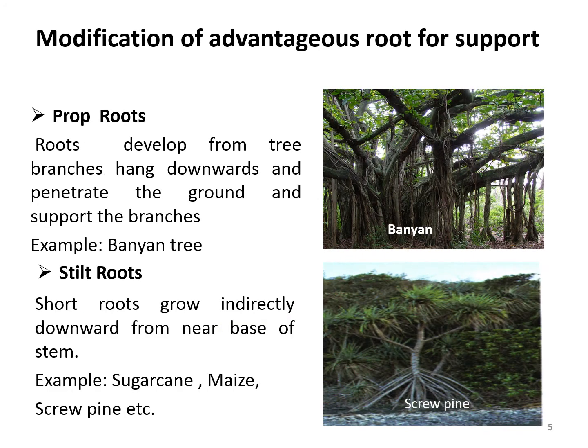Some adventitious roots are modified for support. The hanging structures that support a banyan tree are called prop roots. Roots develop from tree branches, hang down, and ultimately penetrate the ground, thus forming a pillar-like structure that provides support to heavy branches.